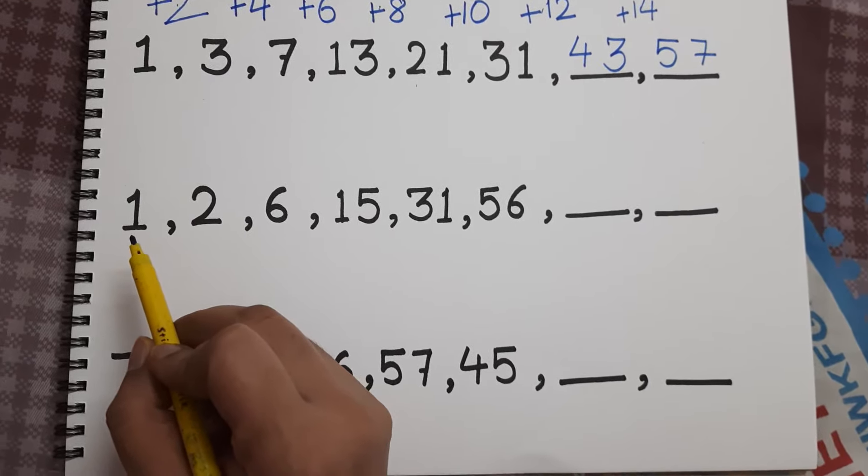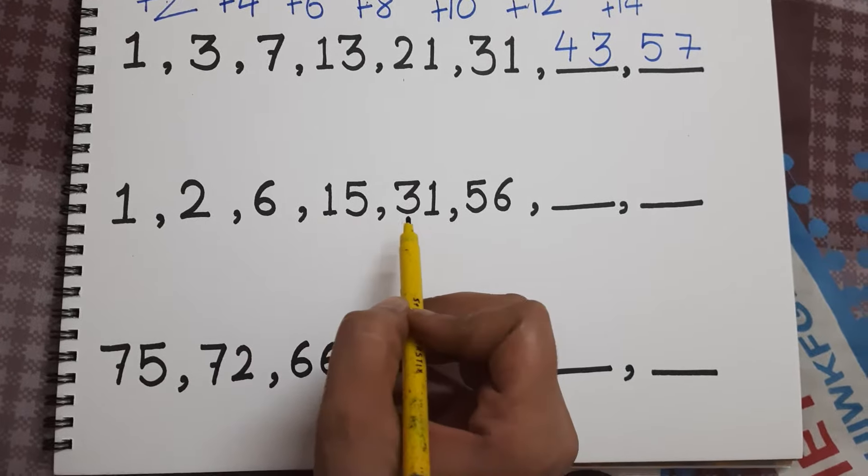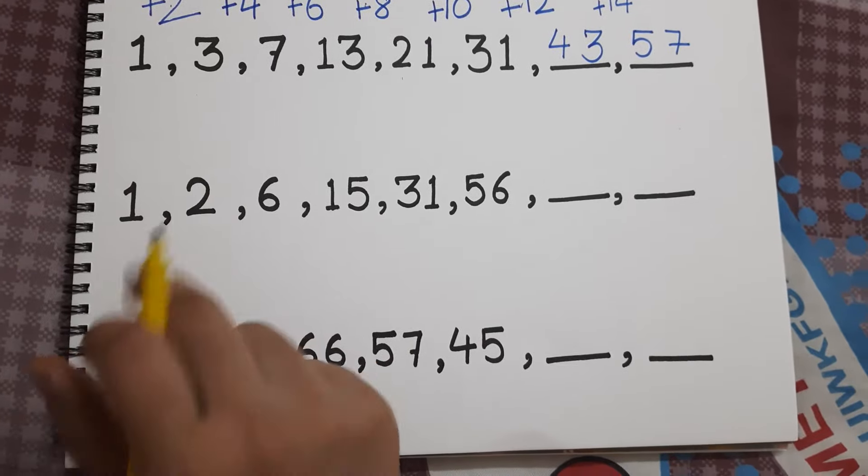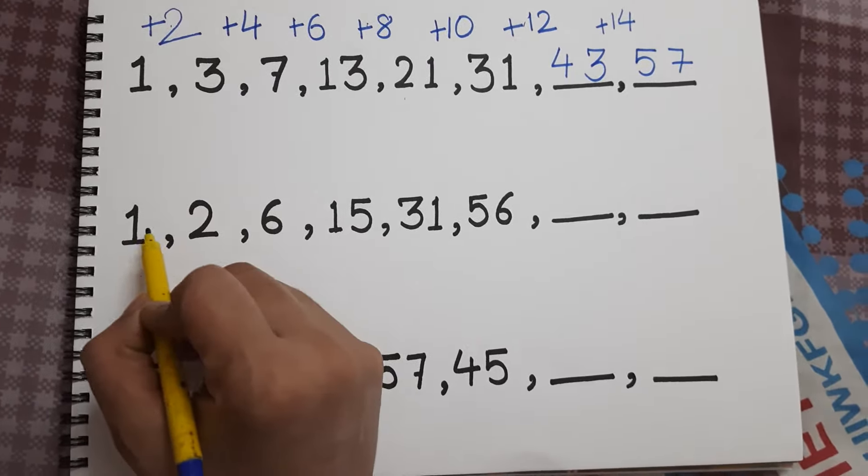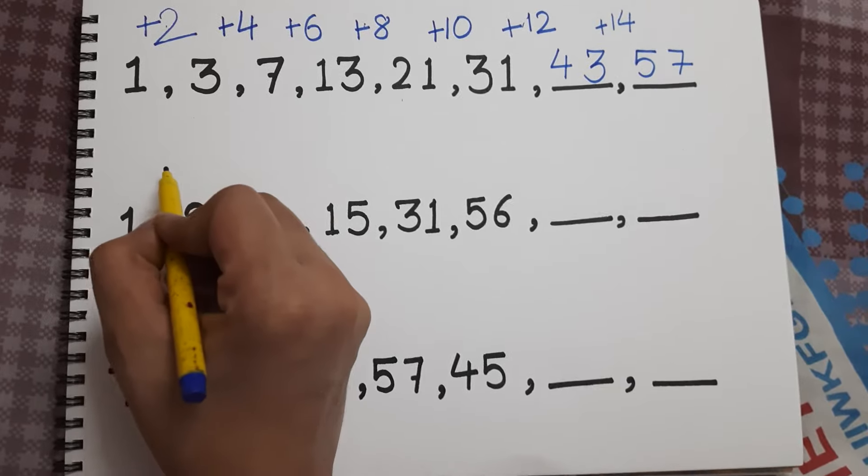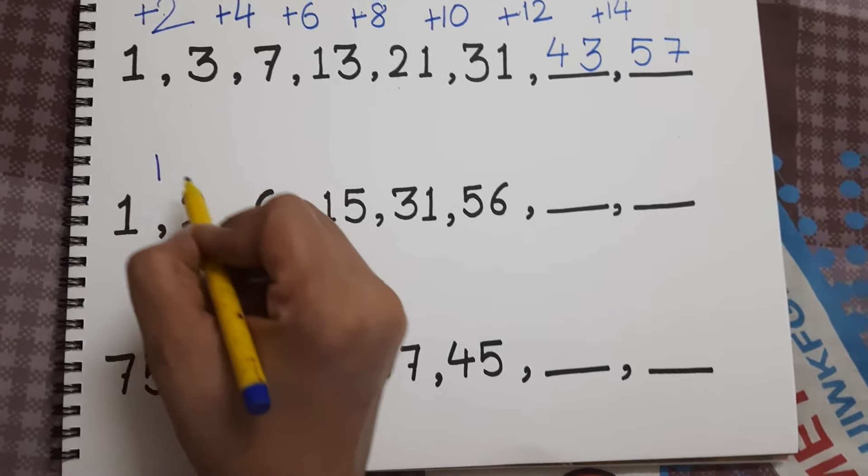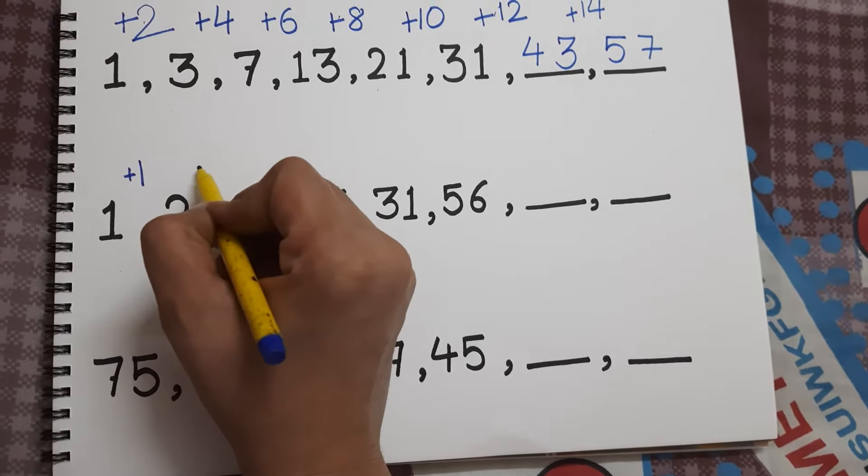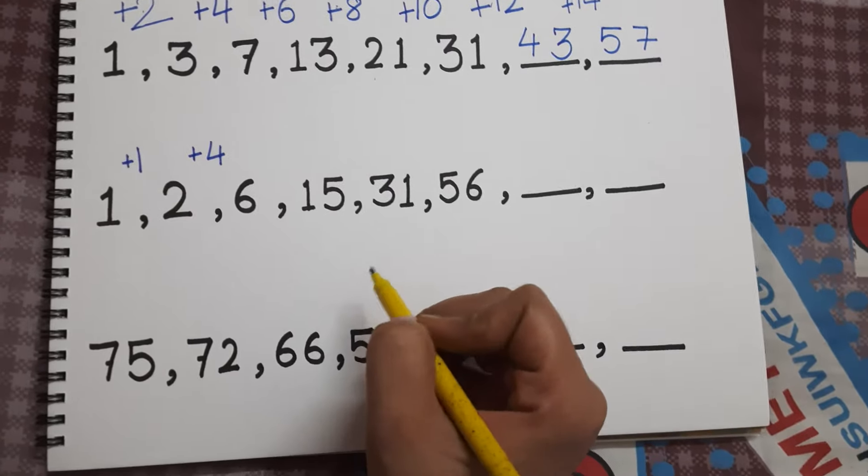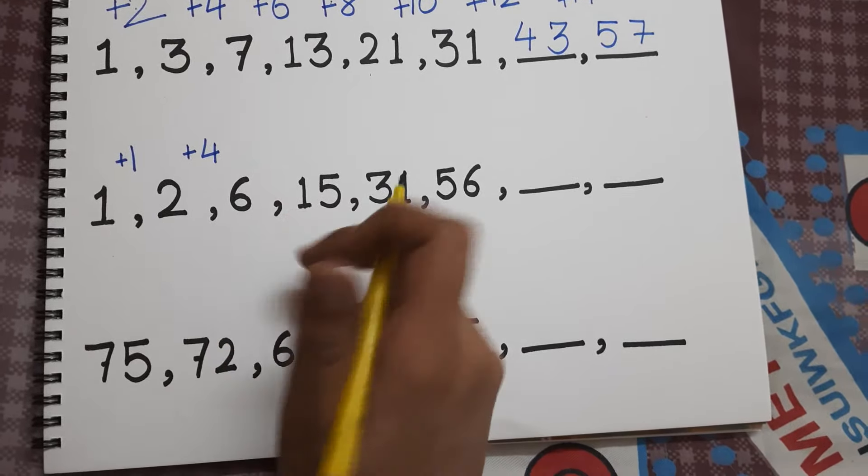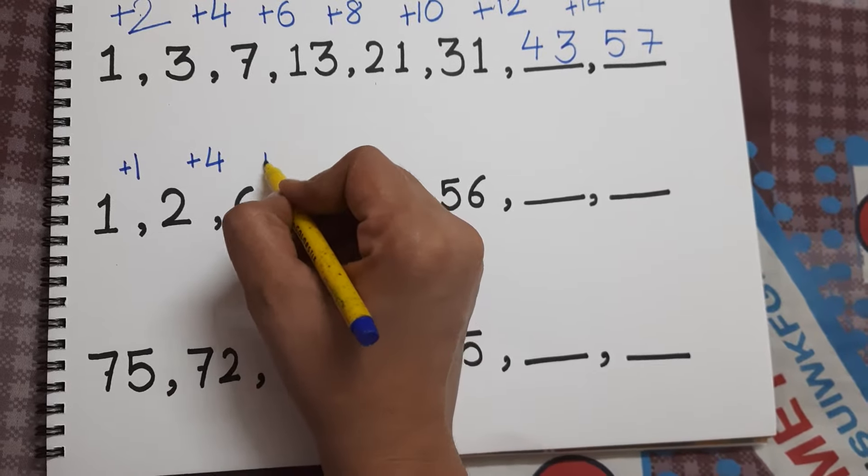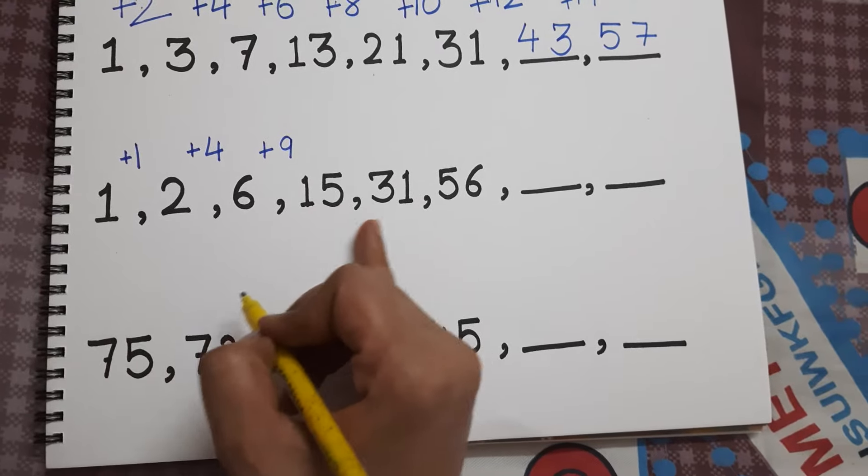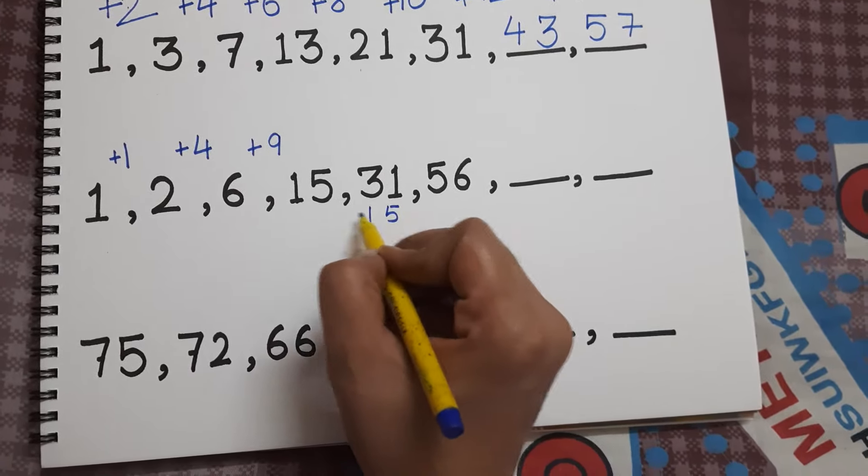Here it is 1, 2, 6, 15, 31, 56. Let's take out the differences and see what the pattern is. So here it is 1, 2, the gap is of 1, okay, 1 has been added. Now 2 and 6, what is the difference? 4, so 4 is added. 6 and 15, it is 9, so 9 has been added.